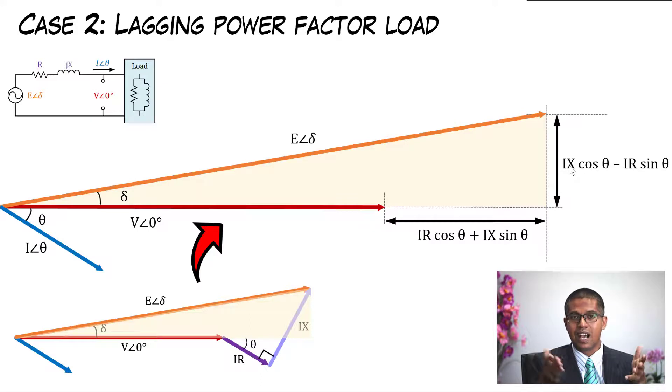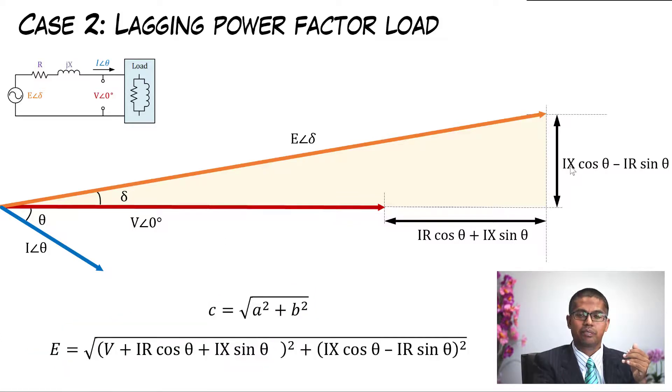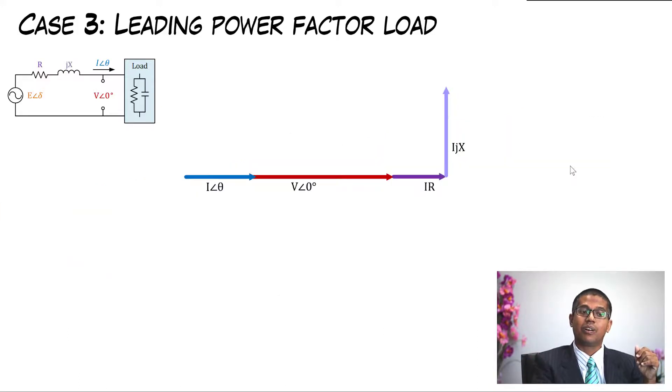Now we use our Pythagoras theorem: c equals the square root of a squared plus b squared. Then we got E equals the square root of V plus IR cos theta plus IX sin theta squared, plus IX cos theta minus IR sine theta squared. That's our case number two. What about case number three?